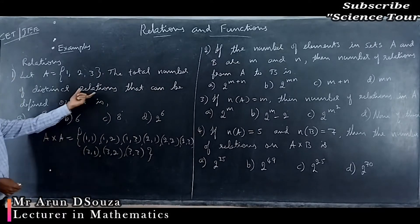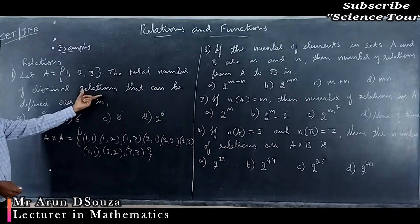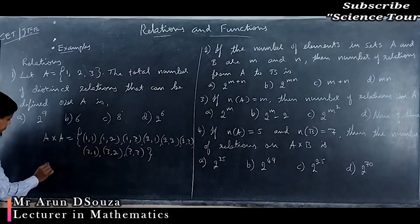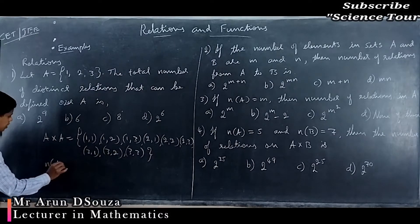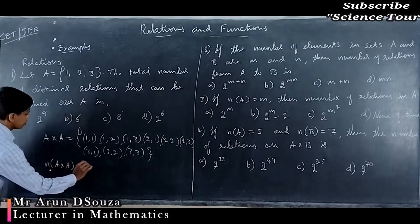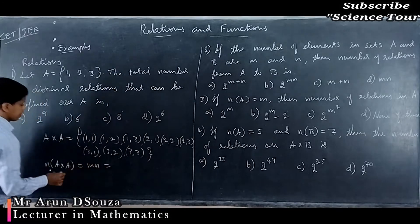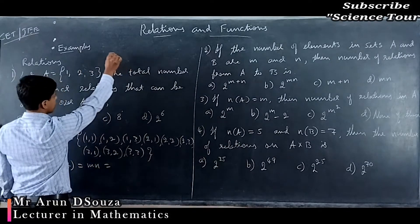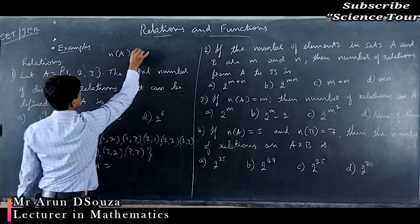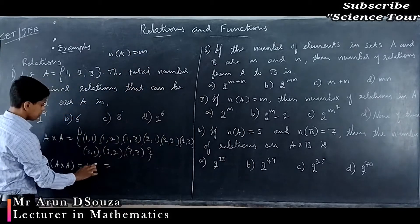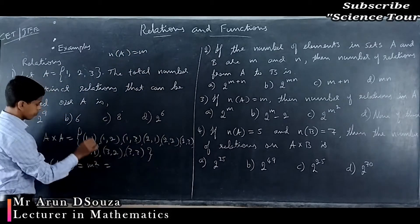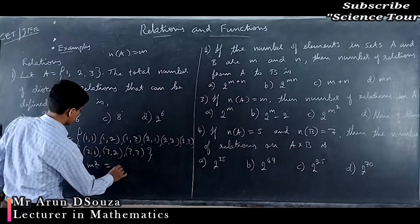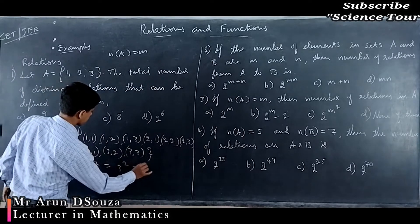What is the total number of elements in A×A? The formula is M×N, but since both sets are the same, that is M squared. So that is 3 squared, which is 9.